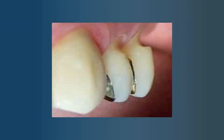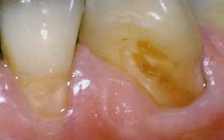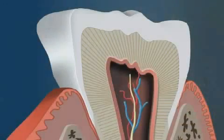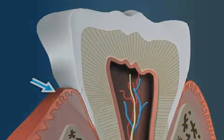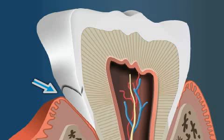Wedge-shaped defects describes defects in the hard dental substance at the border where the dental enamel meets the root cement. The enamel cement border of a tooth is the area where the dental enamel transitions into the root cement.